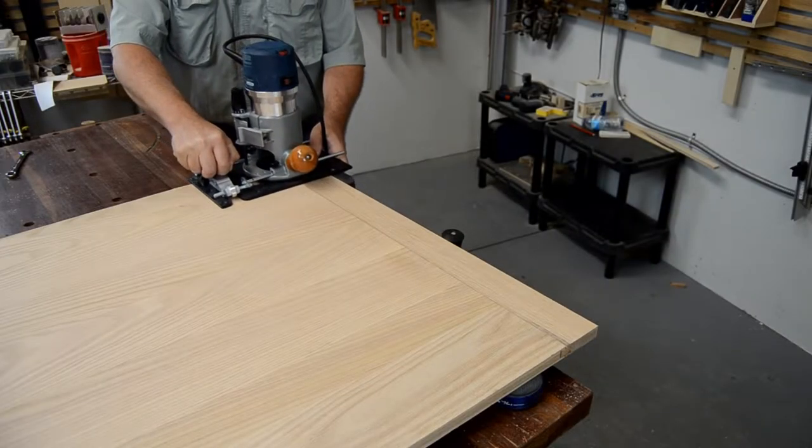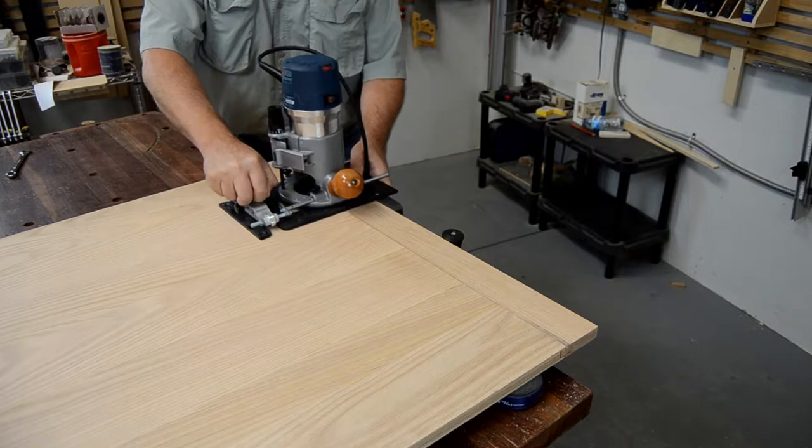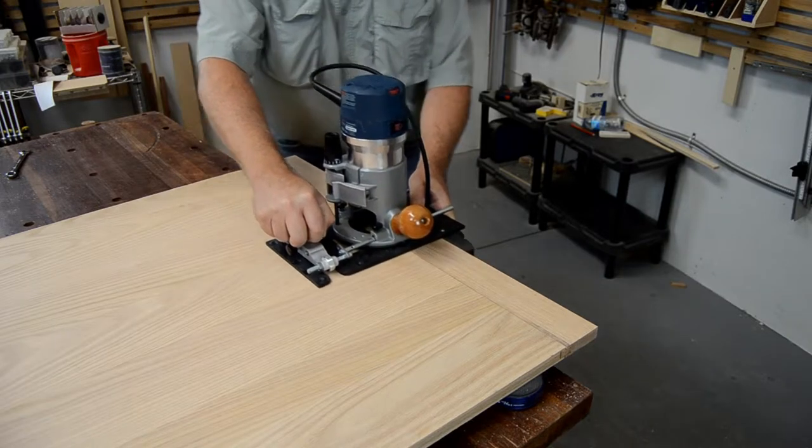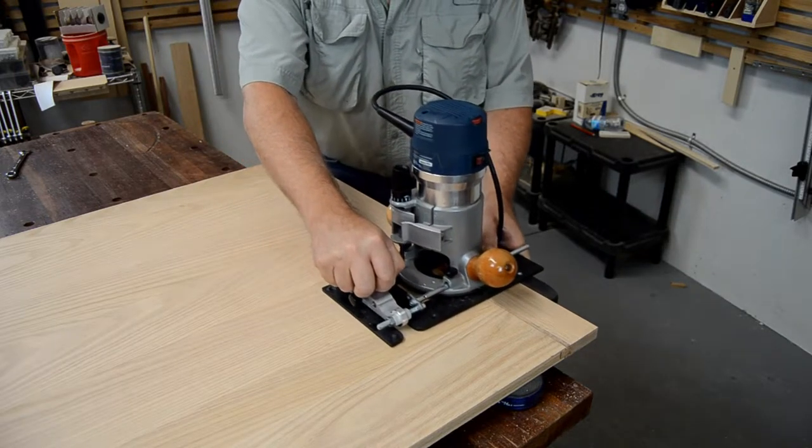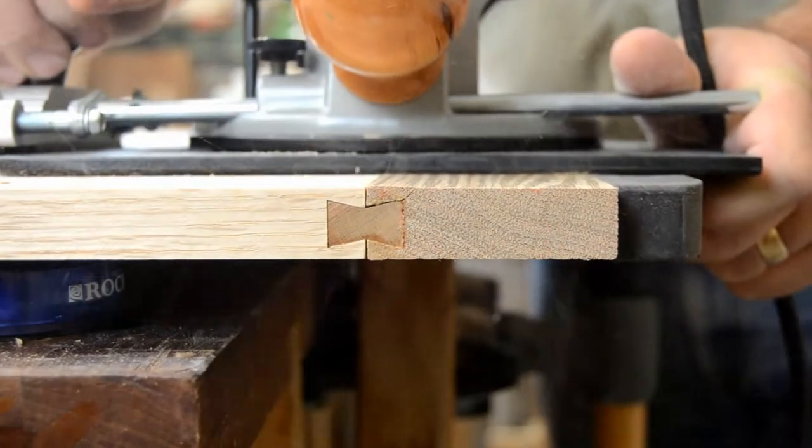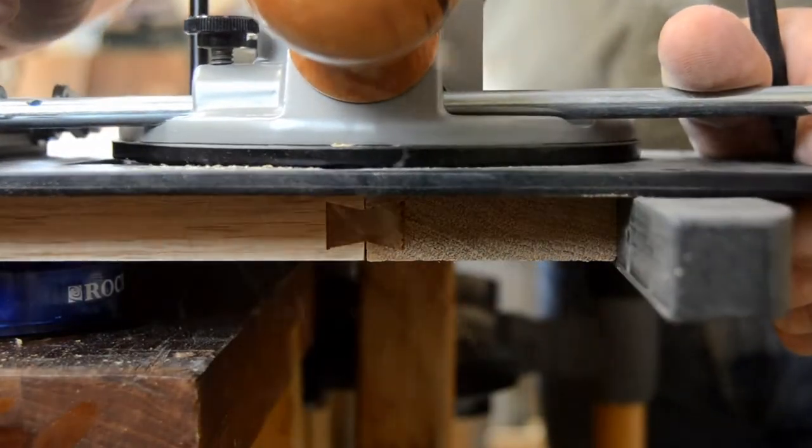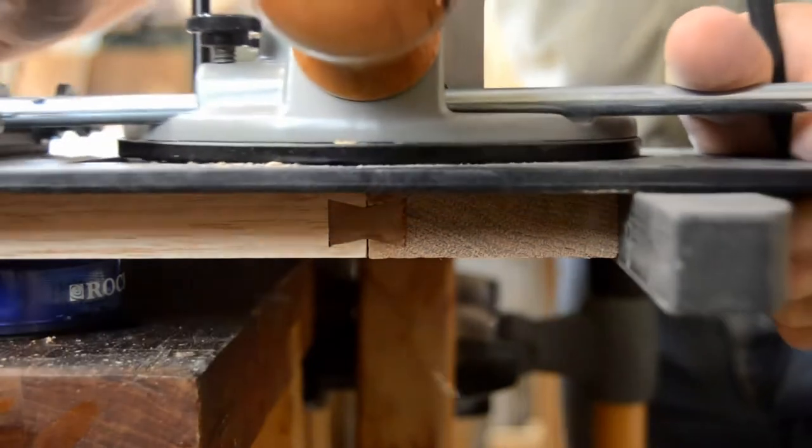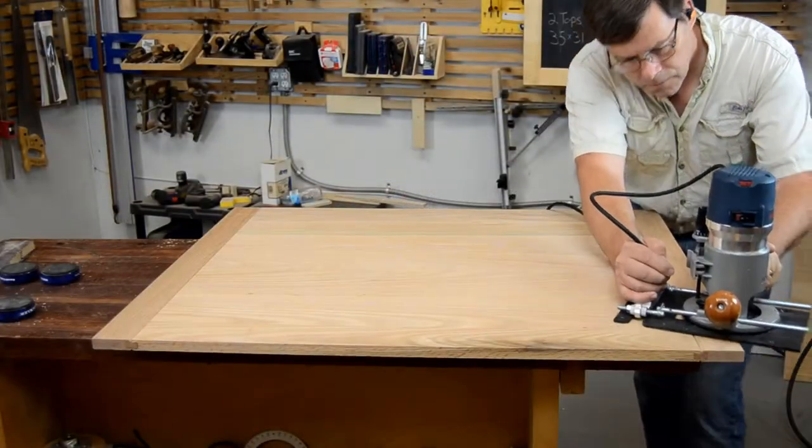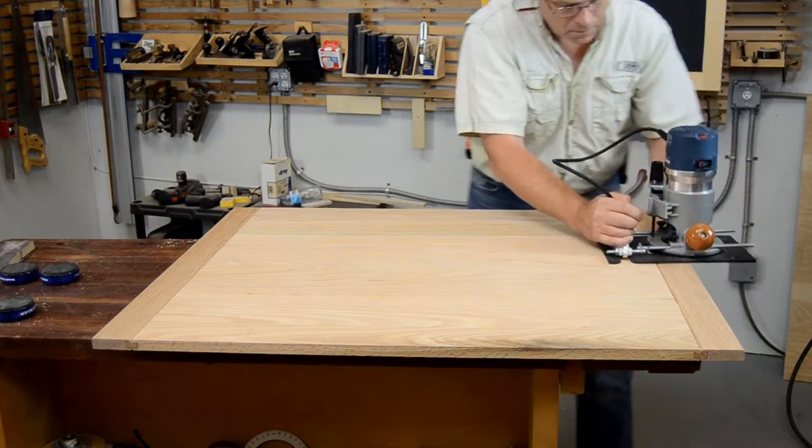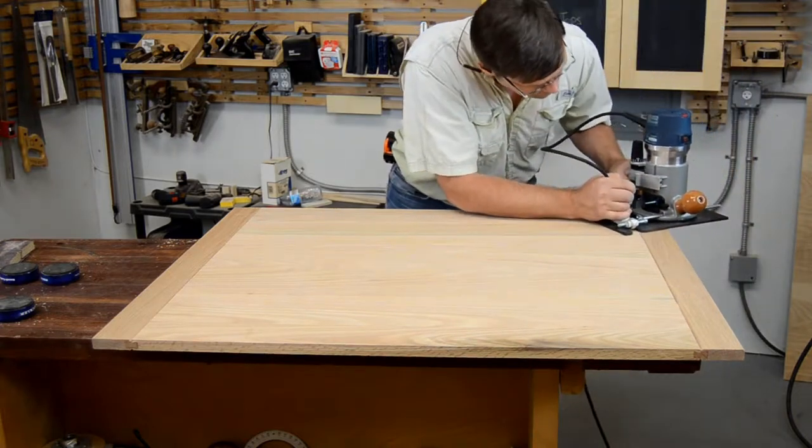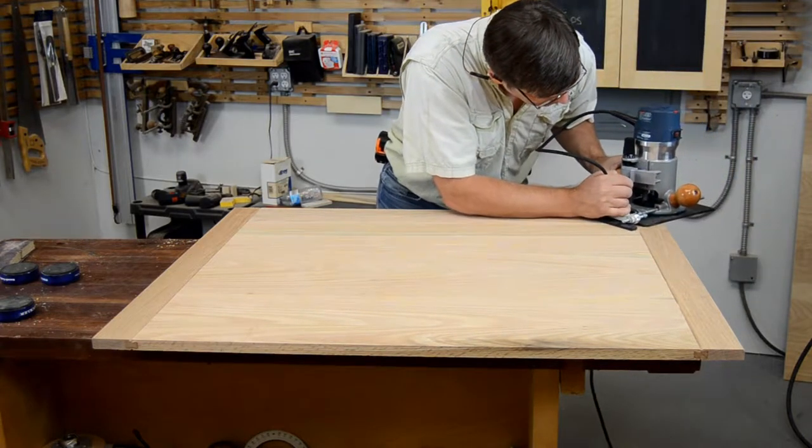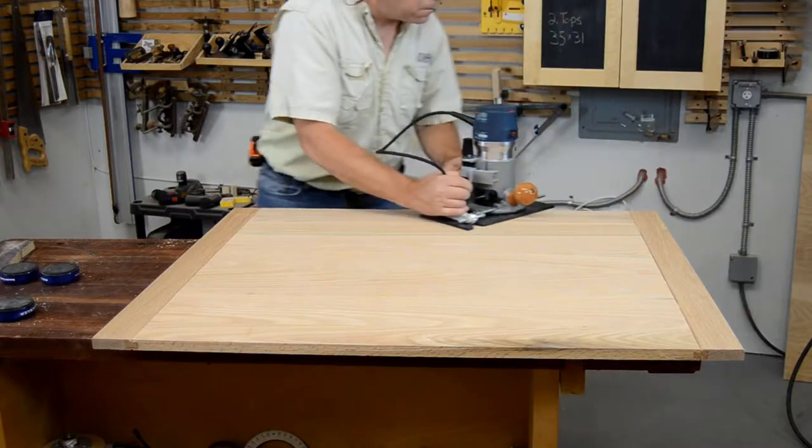With an edge guide attached to my CRV7 router base and a V bit mounted in the router, I'm guiding along all the breadboard edges to form the quirk. To keep things balanced, do both sides of each piece. Next, a chamfer bit with a bearing is set up to make the same cut, but guiding along the outside edges using my CRV7 as an offset base.